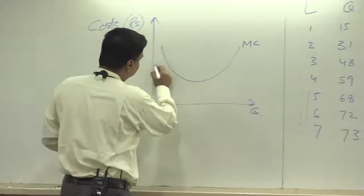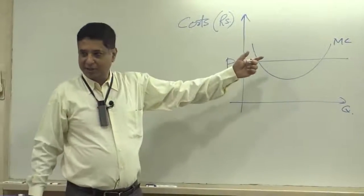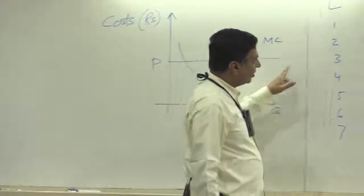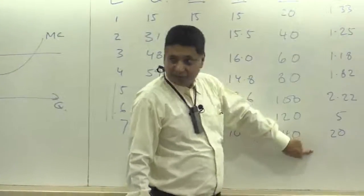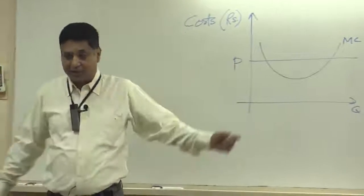And then, suppose this is the market price. So this thing is your marginal cost curve, and the price you remember was 5 rupees, so this is that 5 rupees.